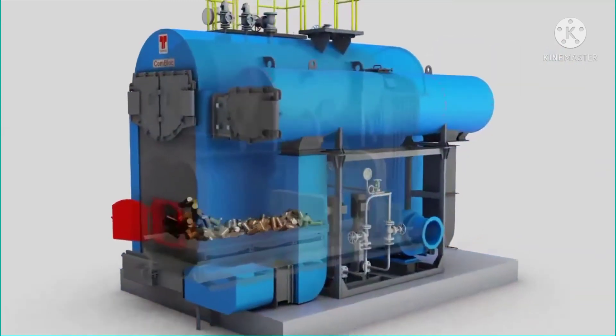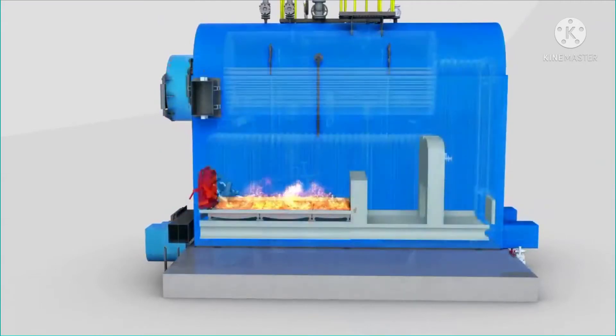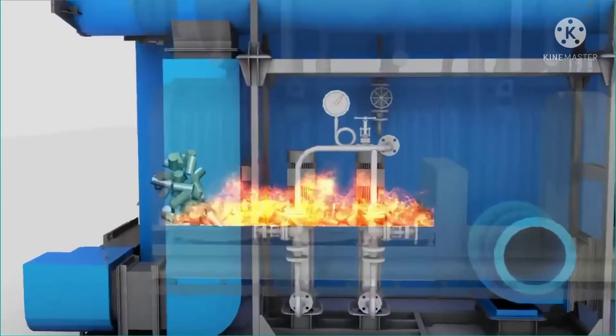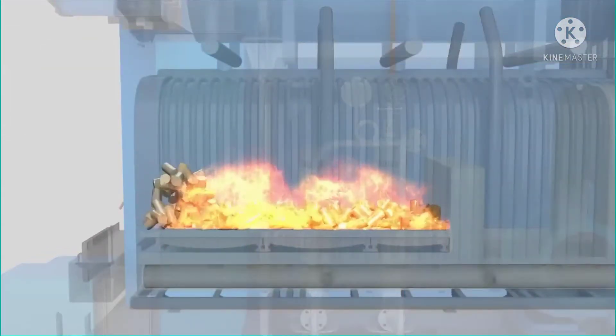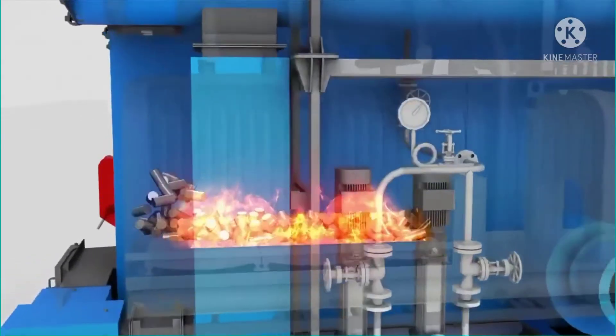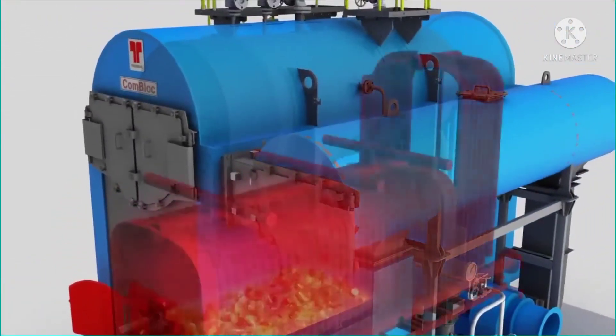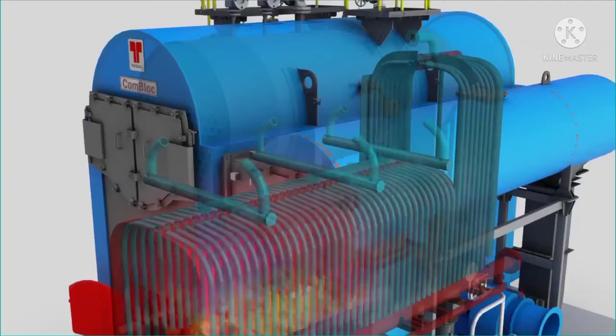Once inside the combustion chamber, the fuel is ignited and combustion starts. Around the combustion chamber is the membrane panel, which carries water through it. The downcomers pass the water from the boiler drum to the bottom headers of the membrane panel. Due to the heat from the combustion chamber, the water gets heated and a mixture of steam and water exits the membrane panel through the risers into the steam drum.